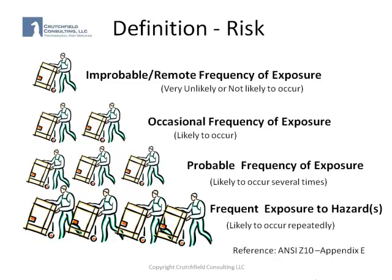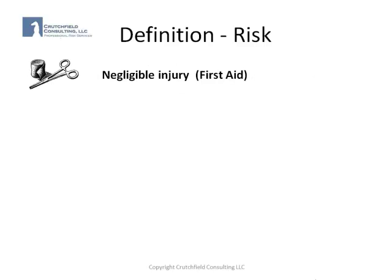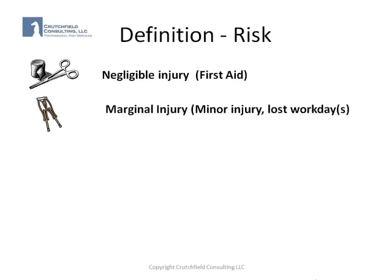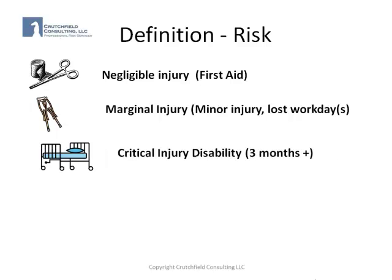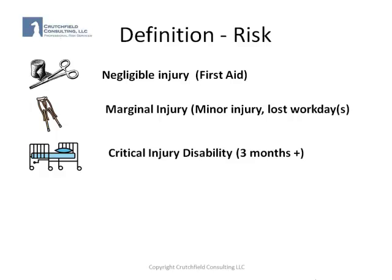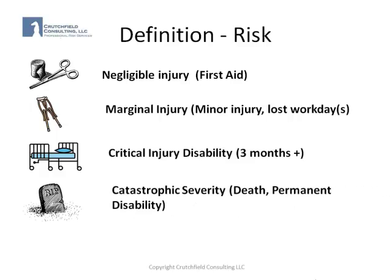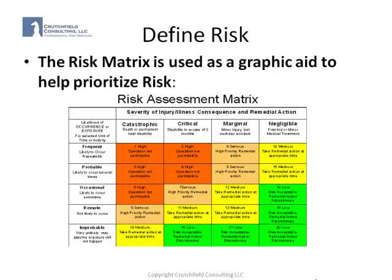Once we understand the frequency of exposure, we look at the severity potential. It could be negligible, which is first aid. It might be a marginal injury, which is minor injury, medical in nature, maybe several lost days, but minimal in nature with recovery certain. We might have critical injury disabilities, which are those that are three months or longer, or the very worst is a catastrophic severity, which means exposure to the hazard might result in death or permanent disability. We use the risk matrix as a graphic aid to help us prioritize risk.